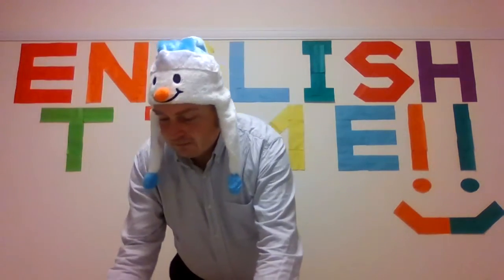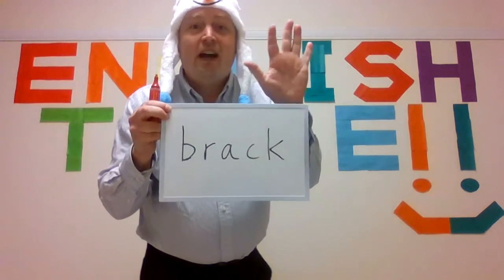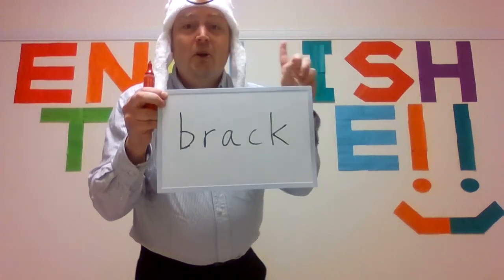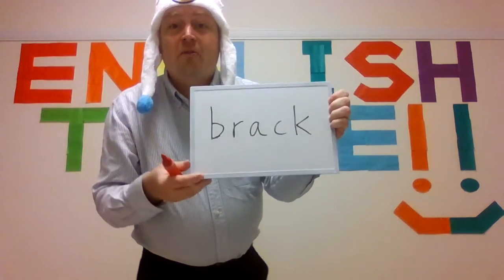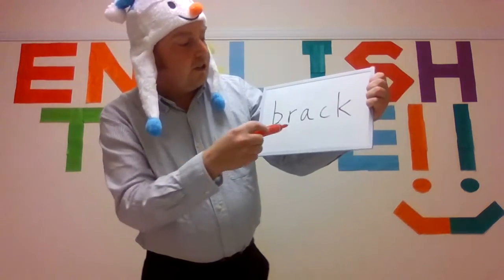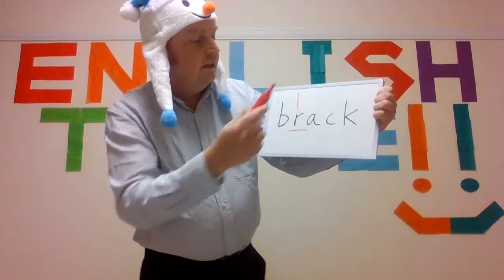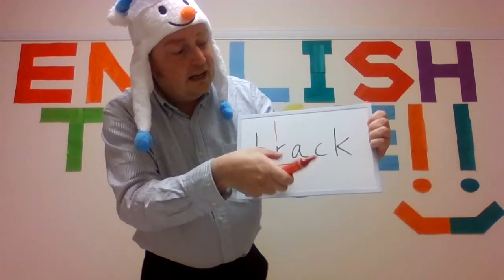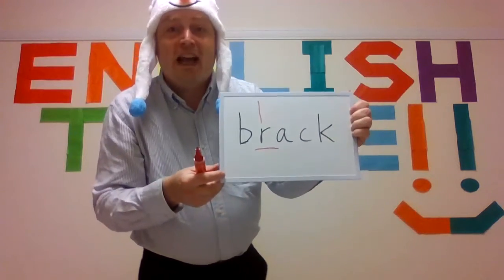Next one — black. Five seconds: five, four, three, two, one. Did you find the wrong letter? The wrong letter is O. You should have a U. Let's spell together: B, L, A, C, K — black. Very good.